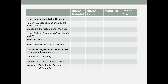The nylon requisitioned by the nylon division was $15,000 — that is a direct material. Factory supplies requisitioned by the nylon division is a manufacturing overhead cost of $1,000. Wages paid to assemblers in the nylon division is a product cost classified as direct labor. The nylon division production supervisor's salary: this person works in the factory so it is a product cost, but since they don't work hands-on the product, it is considered an overhead cost.